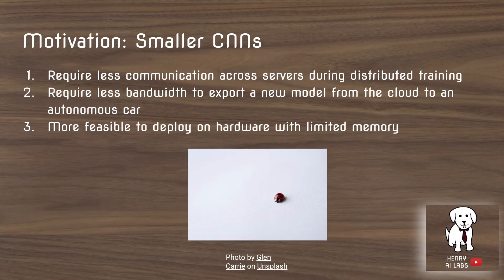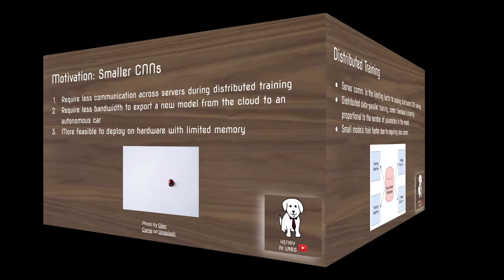The motivation for smaller convolutional neural networks is that they require less communication across servers during distributed training, less bandwidth to export new models, and it's more feasible to deploy on hardware with limited memory.